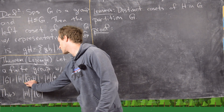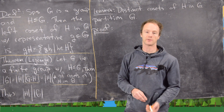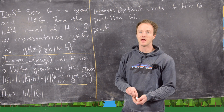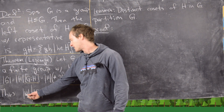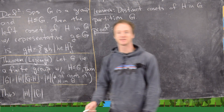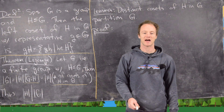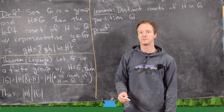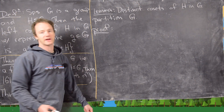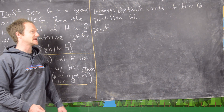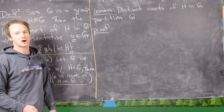A quick corollary is that the size of a subgroup must divide the size of the group. But before we can prove that, we need the following lemma: distinct cosets of H in G partition G. The first thing we want to show is that cosets do not overlap.